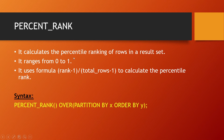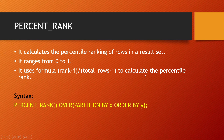Percent rank. It calculates the percentile ranking of rows in a result set. It tells how much a row is ahead of other rows. The result ranges from 0 to 1, and it uses the formula: (rank - 1) / (total number of rows - 1) to calculate the percentile rank. The syntax is: PERCENT_RANK() OVER (PARTITION BY ... ORDER BY ...).